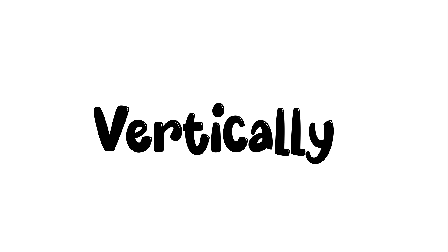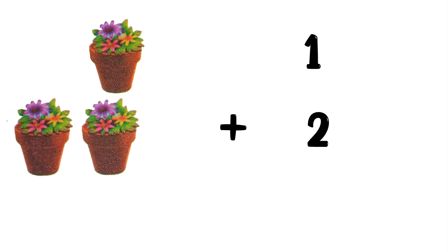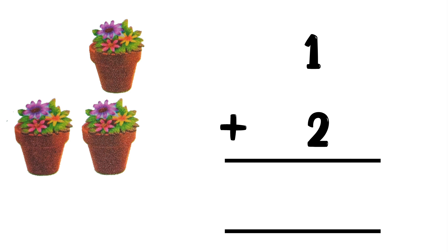Now let's do it vertically. You have one flower pot. Suppose I gave you two more flower pots. How many flower pots do you have in total? Let's write the information we have: one flower pot plus two flower pots equals what? Just count these flower pots: one, two, three — yes, three flower pots. There are a total of three flower pots. Here is another example.